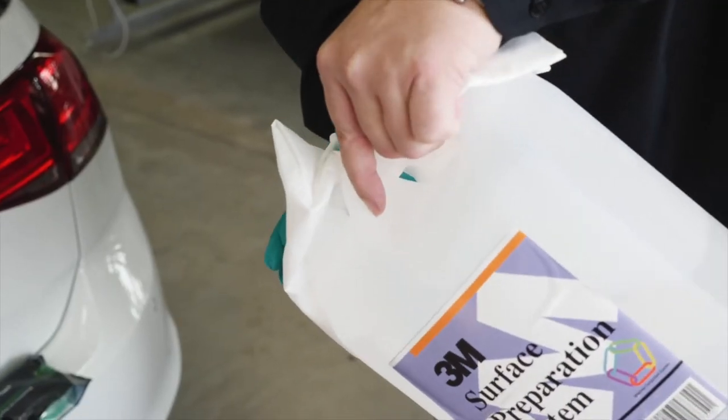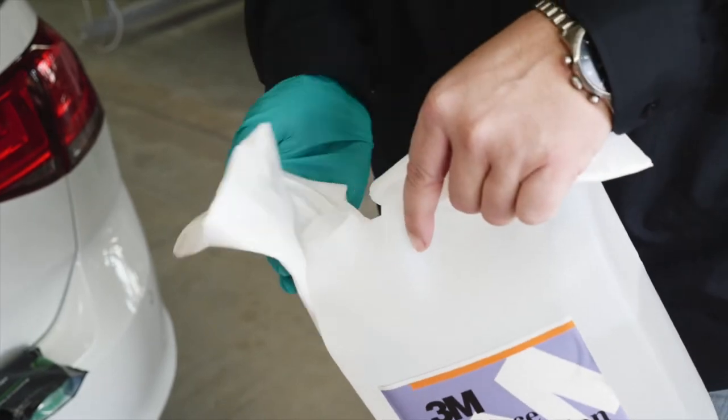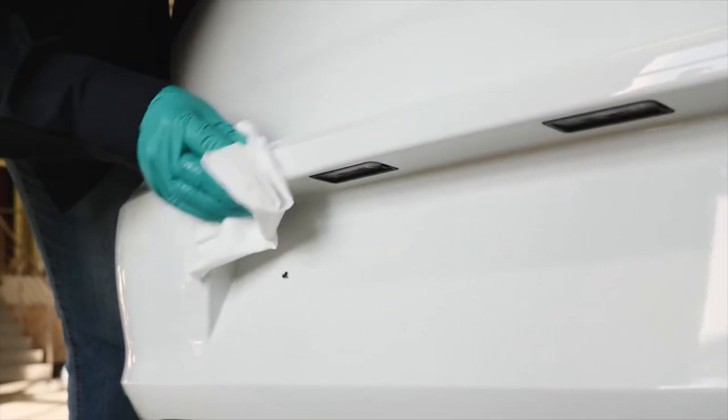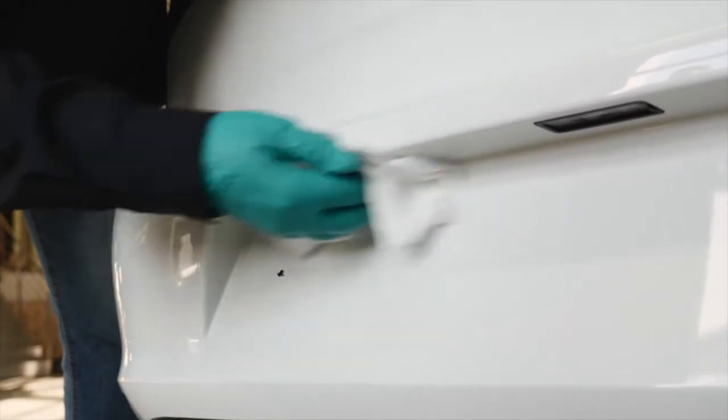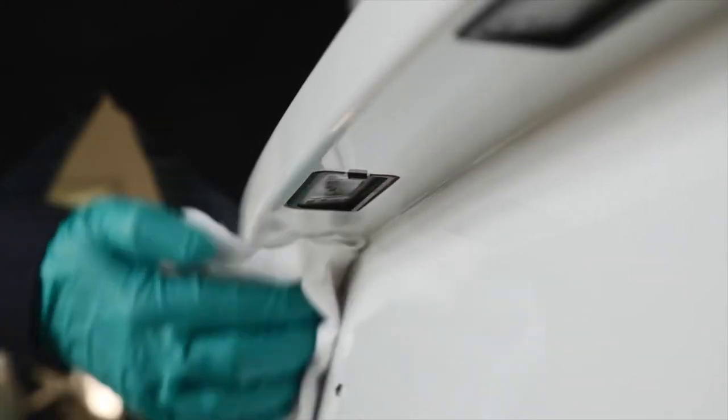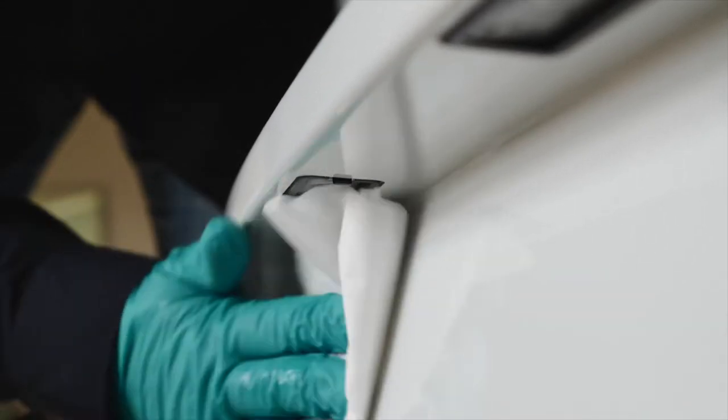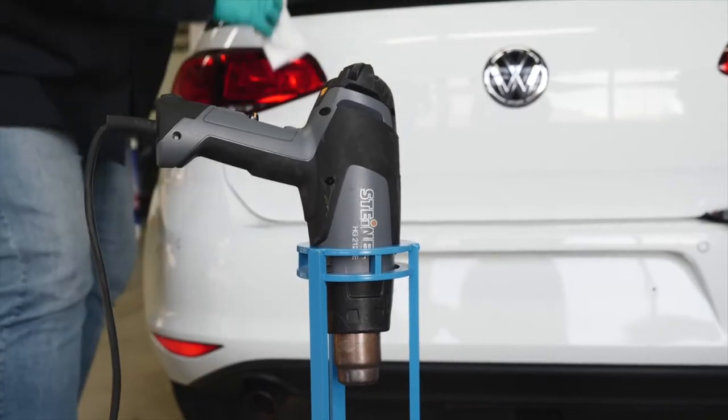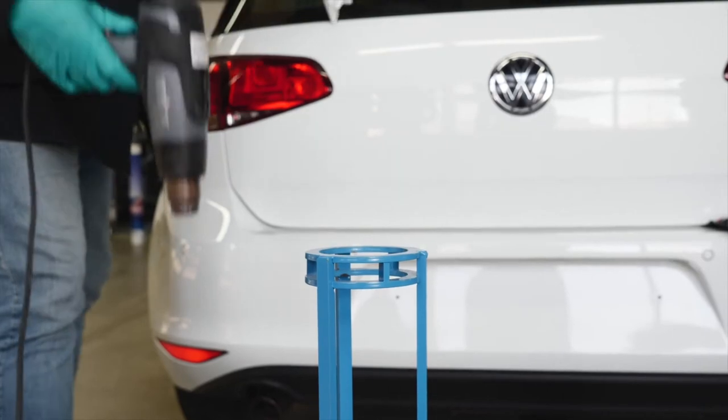For cleaning, pour a small amount of 3M Surface Preparation System onto a lint-free cloth and wipe smoothly inside the recess. Once cleaned, use a dry lint-free cloth to thoroughly dry the surface, making sure all solvents are removed. You can also use a professional heat gun to remove any final traces of solvent.